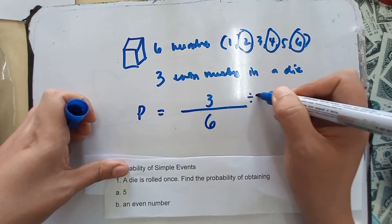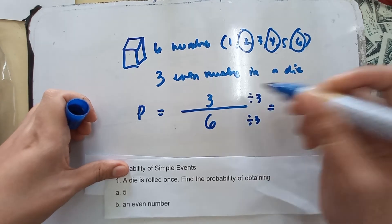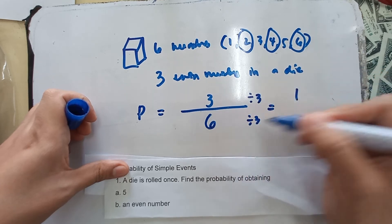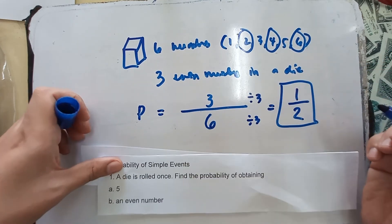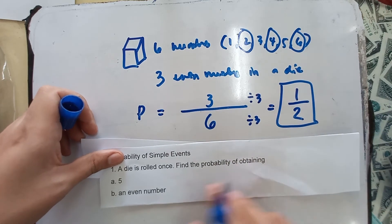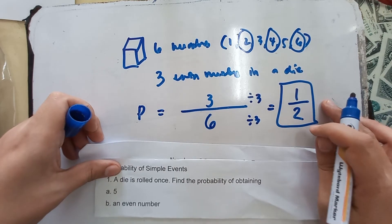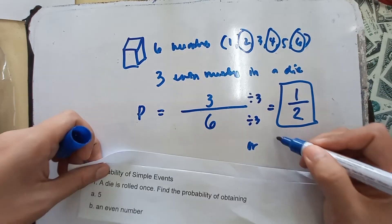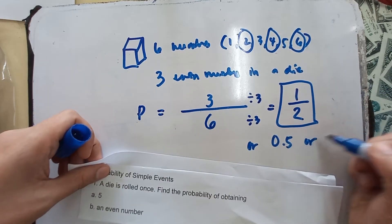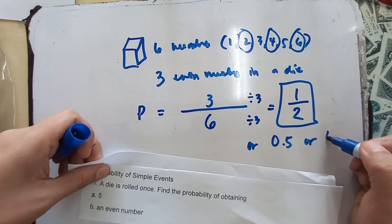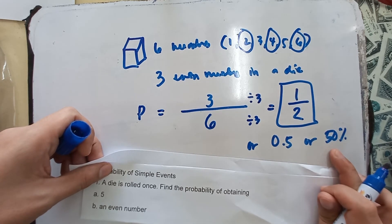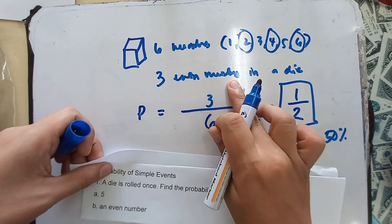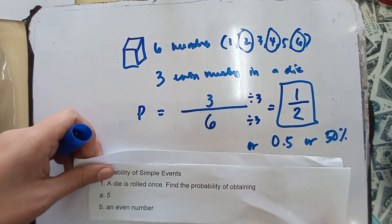Let's reduce this. Divide both by three: three divided by three is one, six divided by three is two. That's one half. Your probability of obtaining an even number is one half, or 0.5 in decimal, or 50% in percent. So, you have a 50% chance to get an even number when you roll a die.